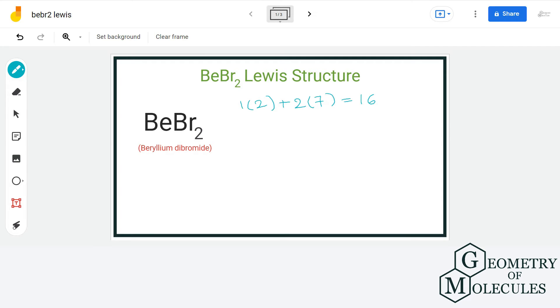For the arrangement of atoms, we will put beryllium atom in the center and arrange bromine atoms around it like this.